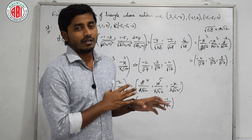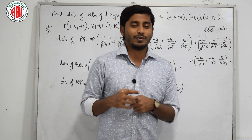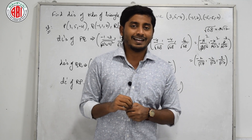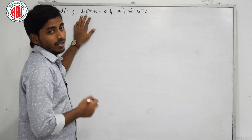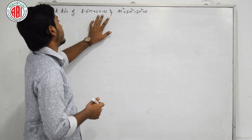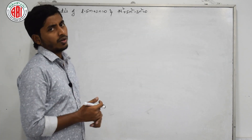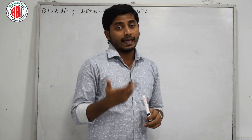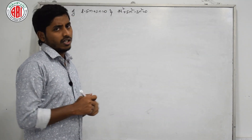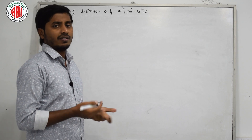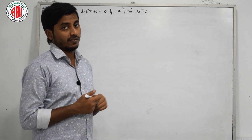These are the basic questions where we use this kind of steps in our long answer questions. Shall we move on to the important long answer question? The question given is: find the DCs of the lines joining these two equations — l minus 5m plus 3n equals 0, and 7l squared plus 5m squared minus 3n squared equals 0. If we solve these two equations, we will get the values of LMN, which are the DCs. We will also learn about direction ratios within this question.